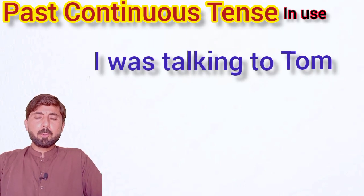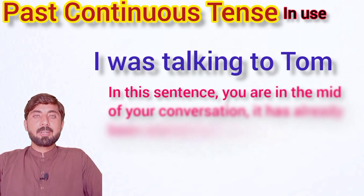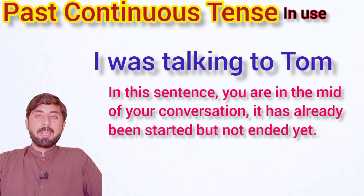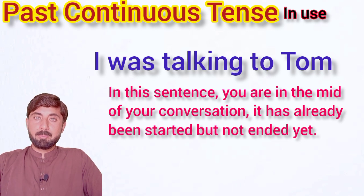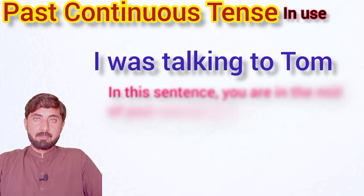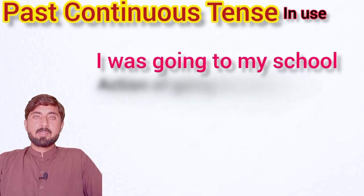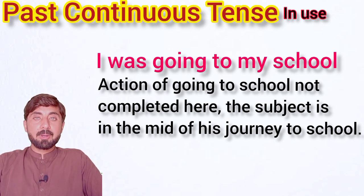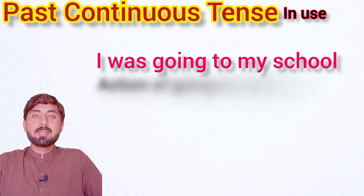So examples are here. You can say 'I was talking to Tom' — means you were in the process, in the middle of your conversation with Tom. Your conversation was not completed, but it was in progress. Next example: 'I was going to my school' — means the action of going was not completed. It was in progress, it was continuous. You were in the middle of your action of going to school.